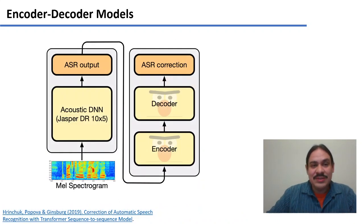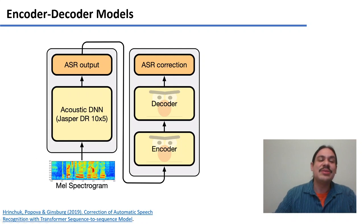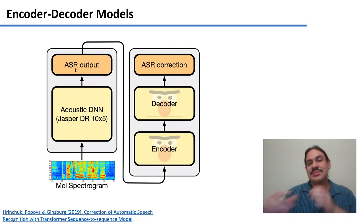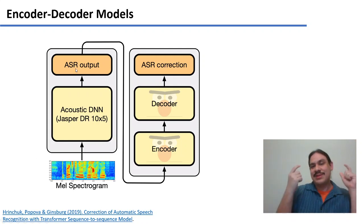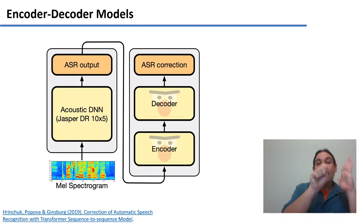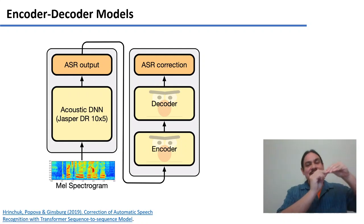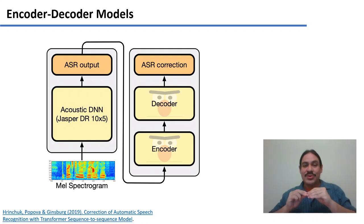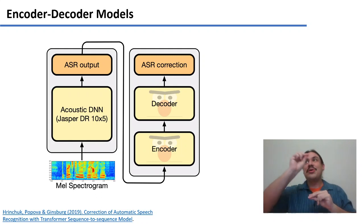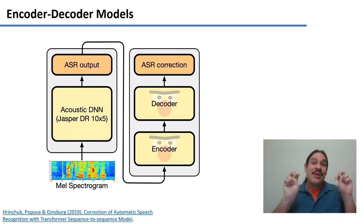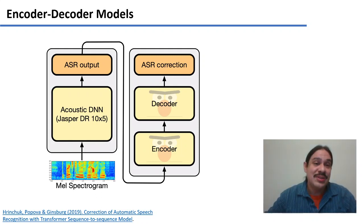Here is an example of such an architecture. Again, you take a spectrogram and produce an intermediate phone representation of the string, then pass that through an encoder which decodes it as the orthographic version of what you're trying to transcribe.